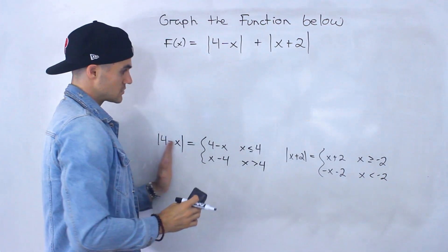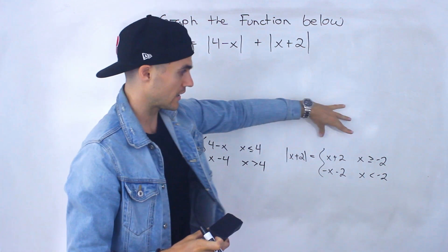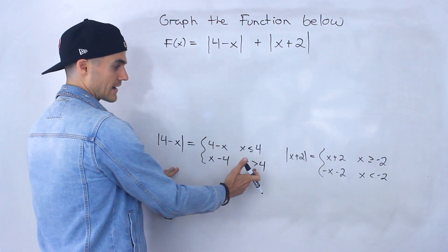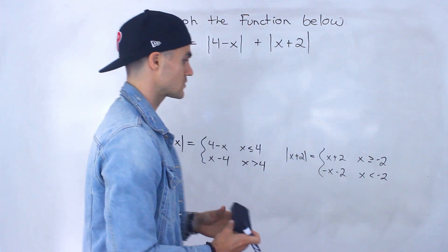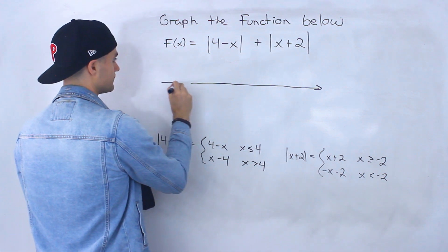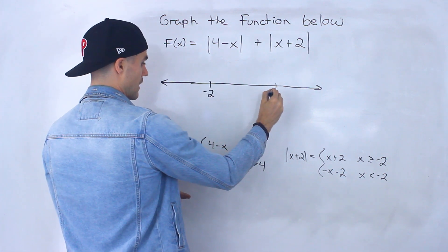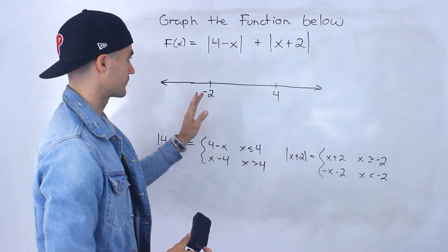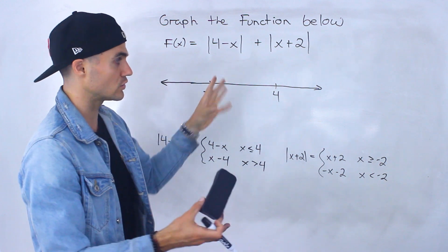Now, because we're adding these two expressions, we need to combine them. They have different intervals, so we have to combine those intervals. On a number line, our two key meeting points are negative 2 and positive 4. That gives us three intervals to work with when combining these piecewise functions.